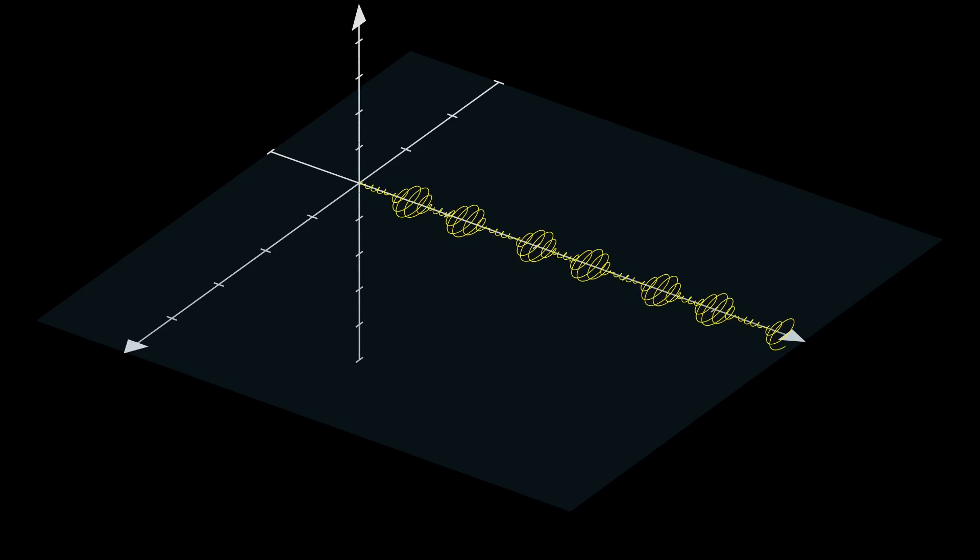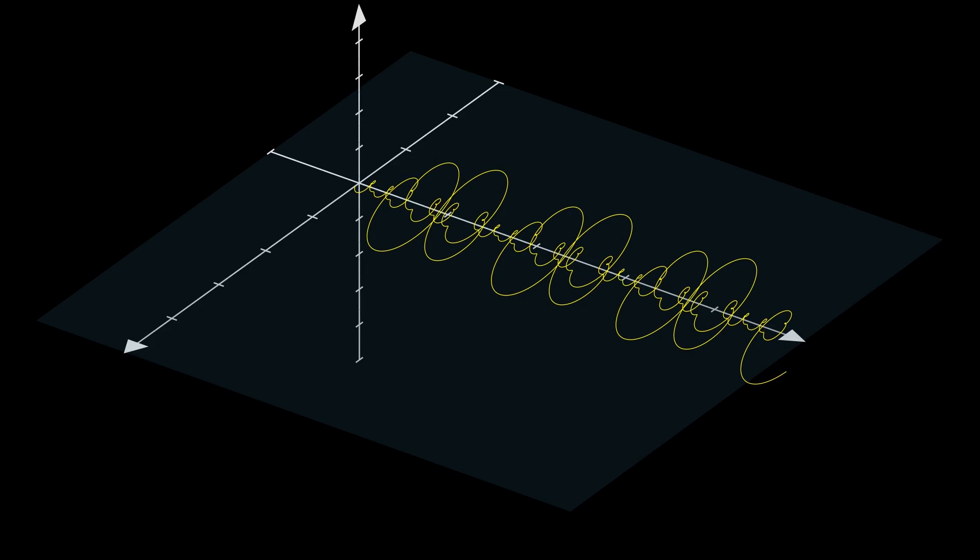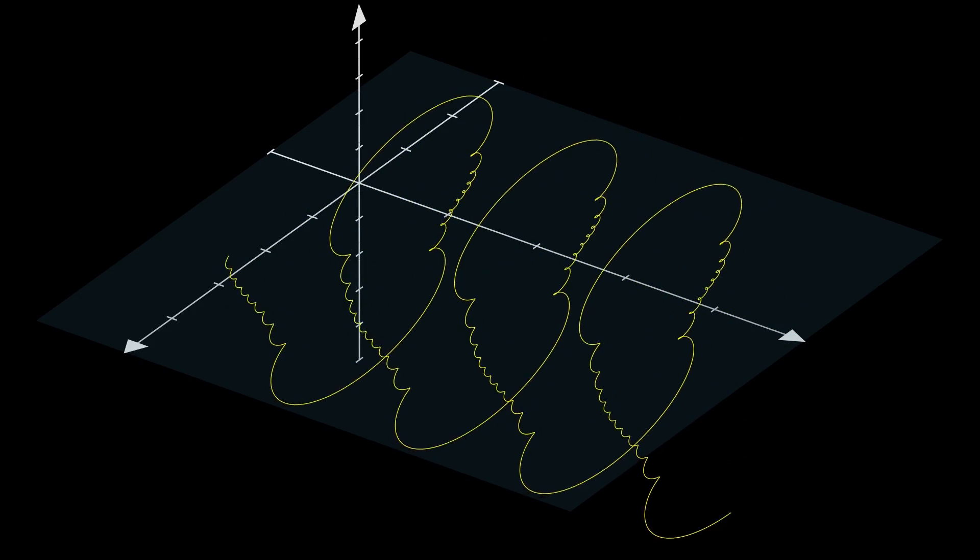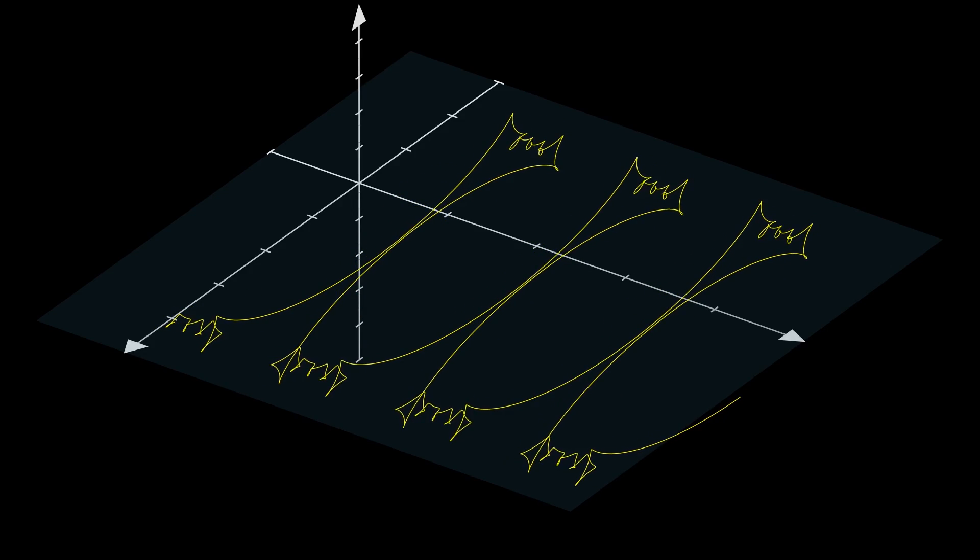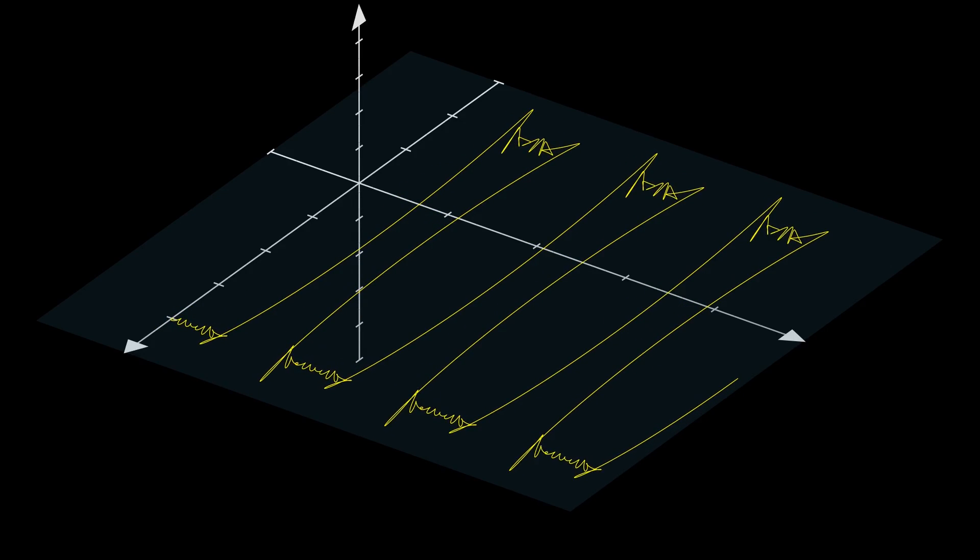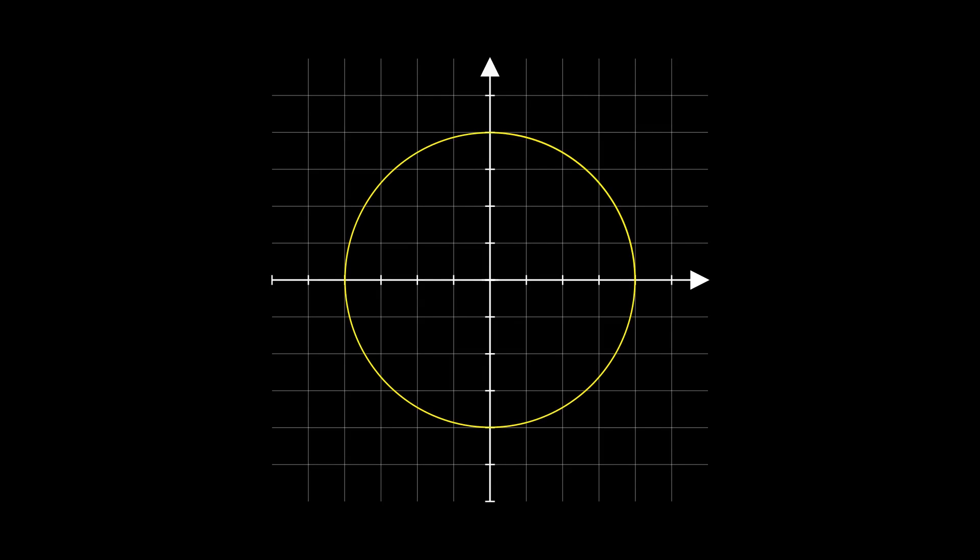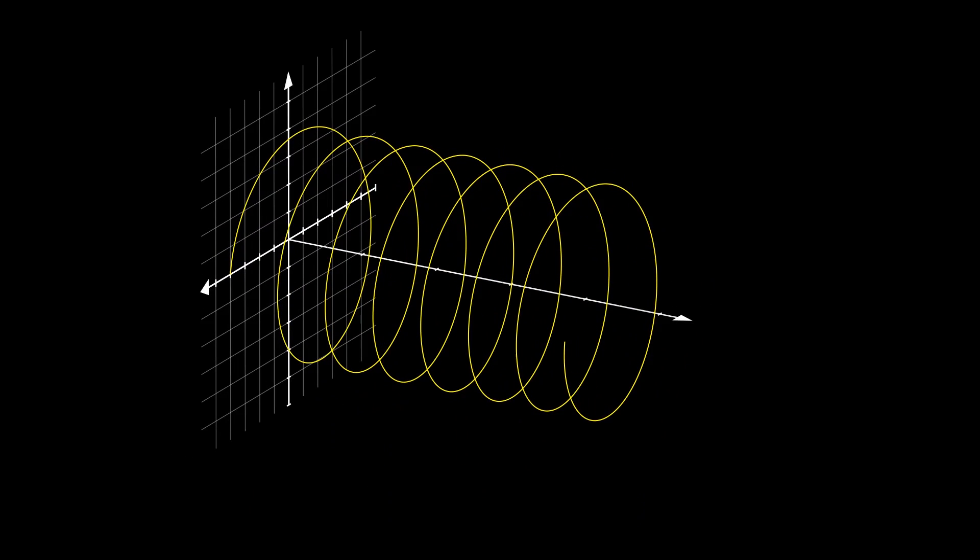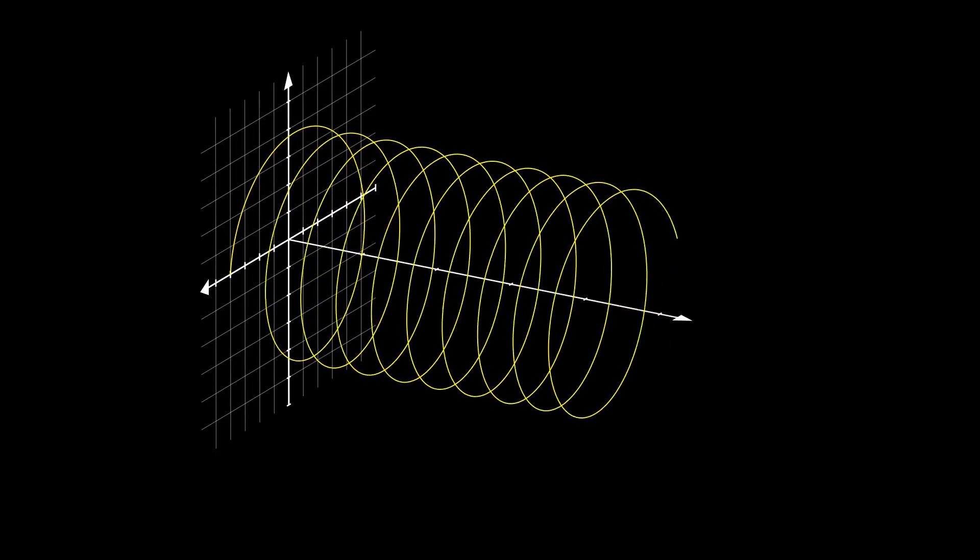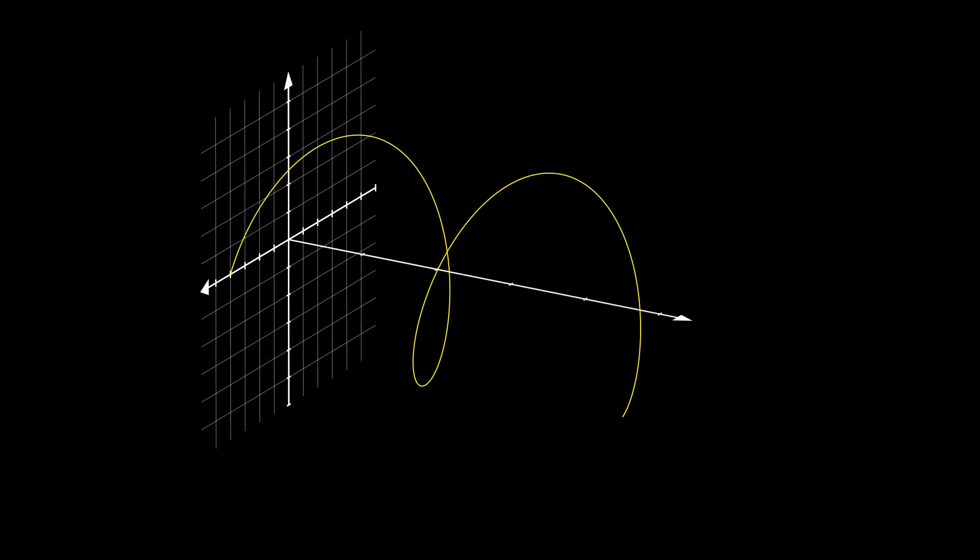In the last video on Fourier series, we saw that any periodic function can be represented as a sum of weighted complex exponentials. We saw that the complex exponential is a function that moves in circular motion in the complex plane. The higher the frequency, the higher the rotational speed.